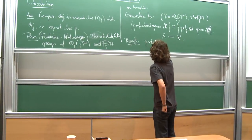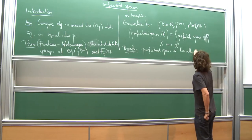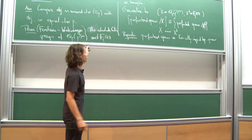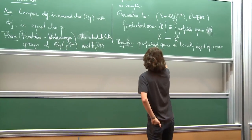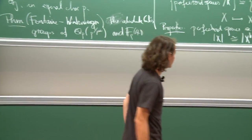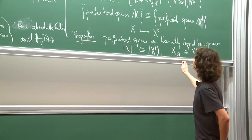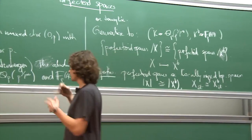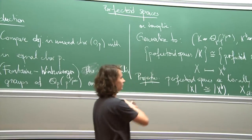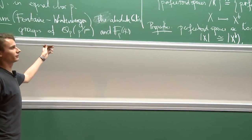First of all, perfectoid spaces are locally ringed topological spaces, so in particular one can talk about the underlying topological space. In fact, that's just the same on both sides. Even better, not only the topological spaces are the same, but even the étale topoi are canonically equivalent. So if you just take x to be the point — Spec k or something — then this will exactly reprove the theorem of Fontaine-Wintenberger. In fact we will need this as an ingredient, but this serves as a generalization to the relative setting of the theorem of Fontaine-Wintenberger.